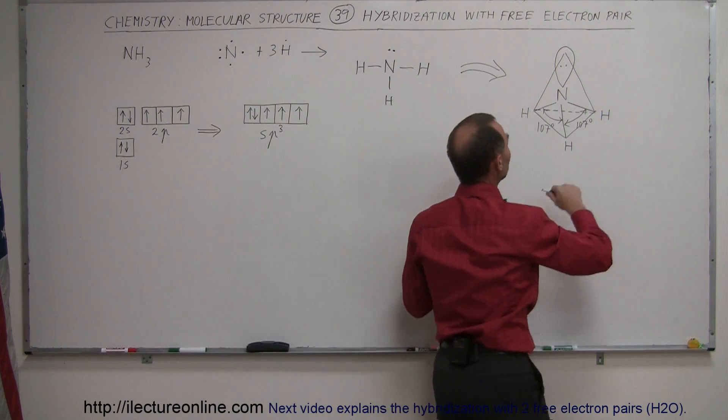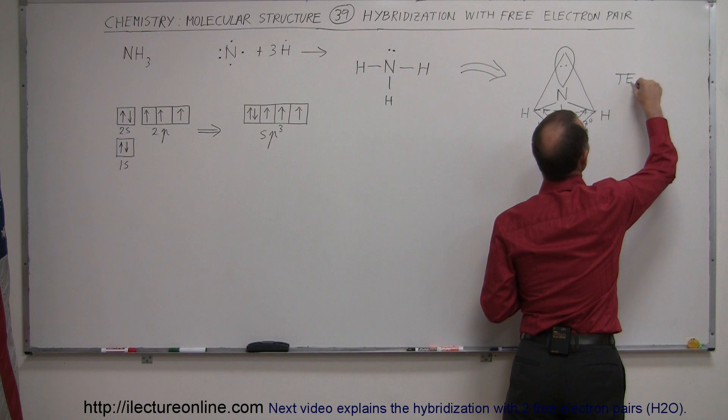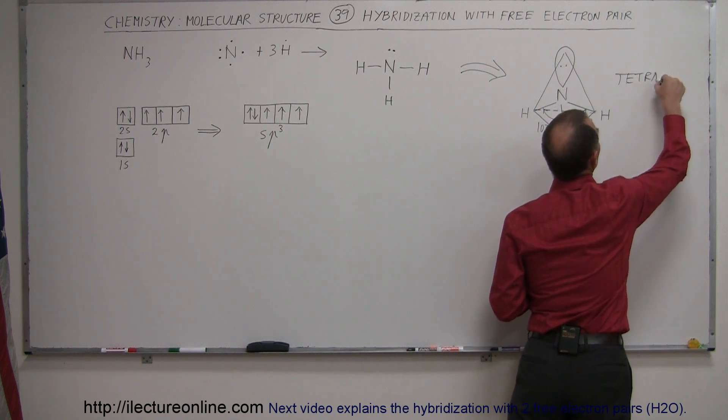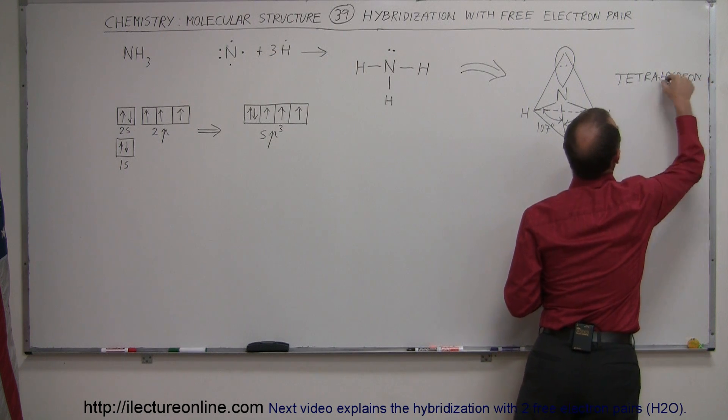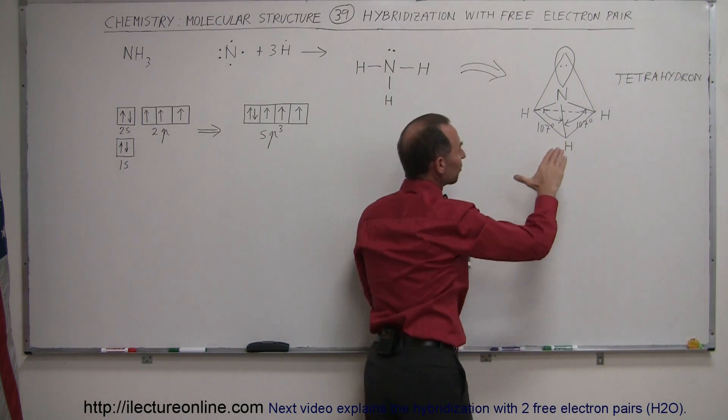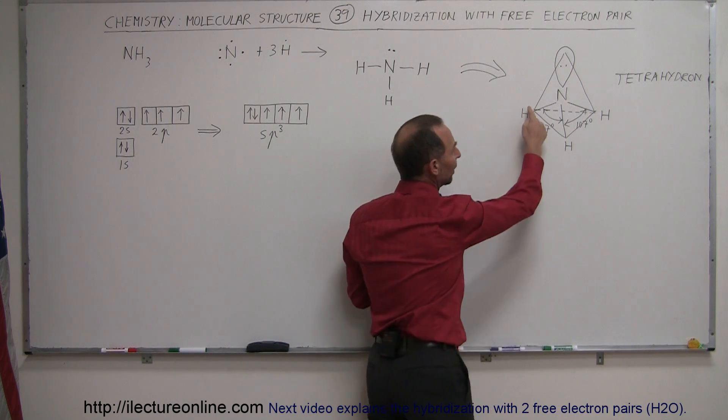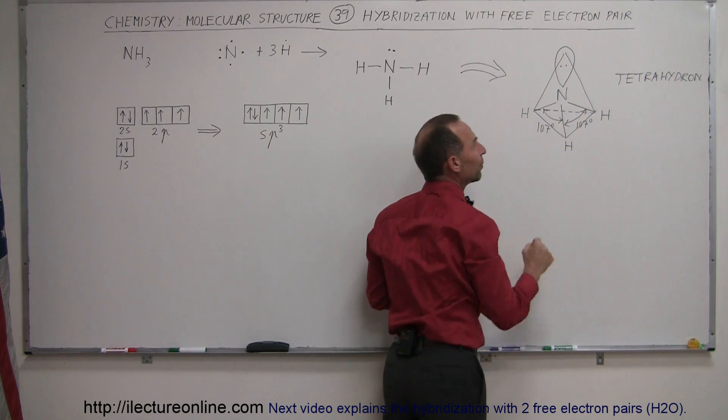It's a tetrahedral shape, so this is a tetrahedron. Let me write this, tetrahedron like that, which means that the hydrogen molecules are bent away from the plane downward in such a way that there's a bond angle of about 107 degrees.